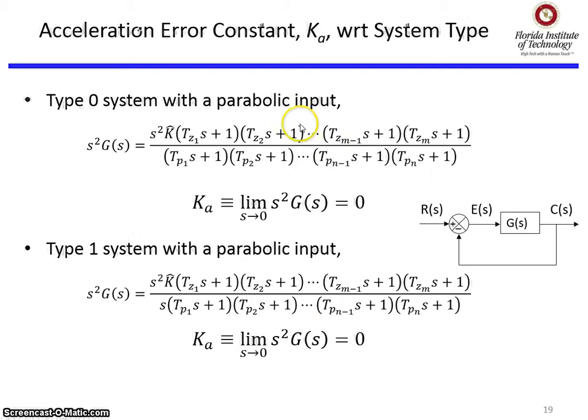Once again, we're going to run through different system types and see what the value of Ka is. Type 0 system with a parabolic input. We form s squared G(s), so there's the s squared. It's a type 0 system, so there's no free s's in the denominator. And then we run s equal to zero. So all these guys go away, we're left with ones. All these guys go away, we're left with ones. We have a K hat left over, and then guess what? As s goes to zero, Ka goes to zero.